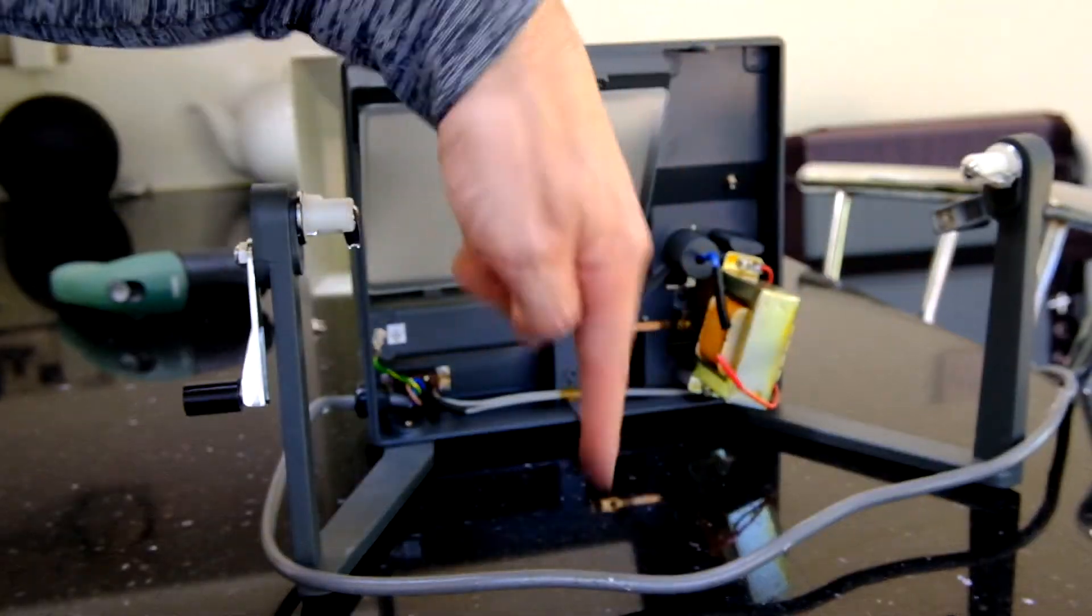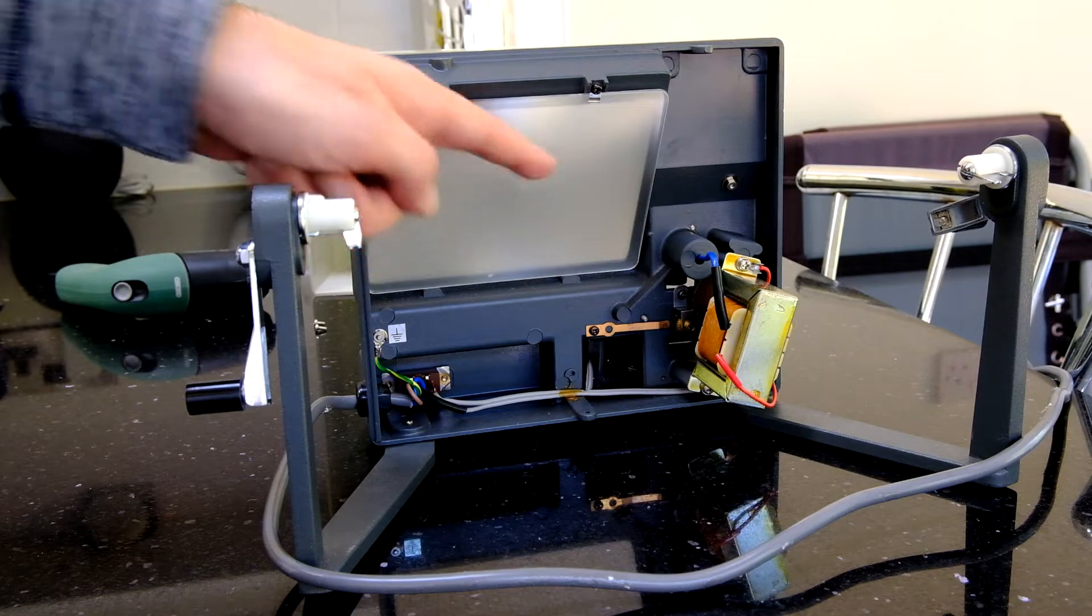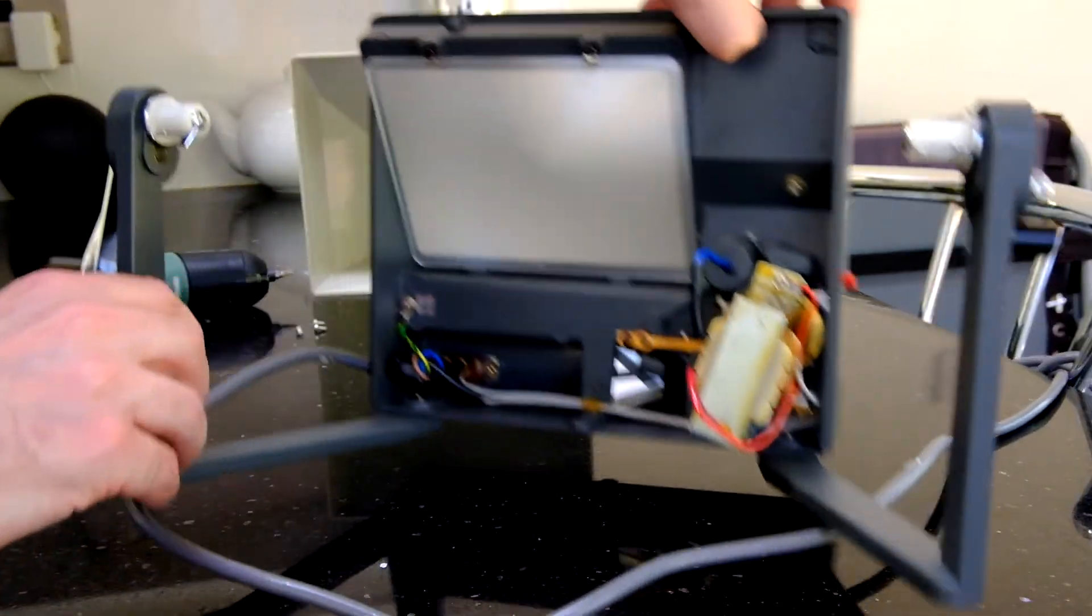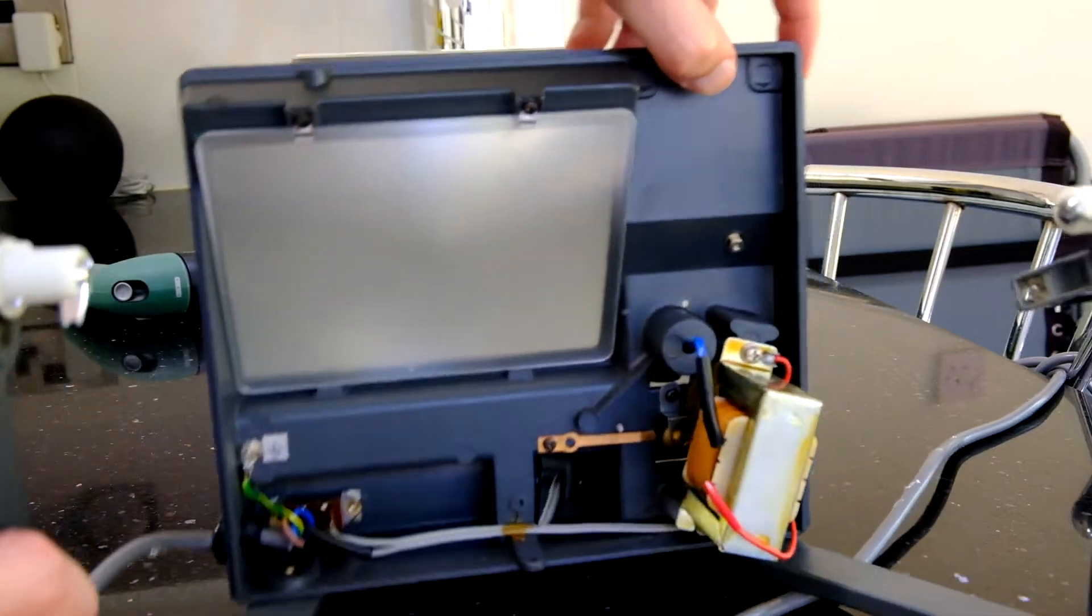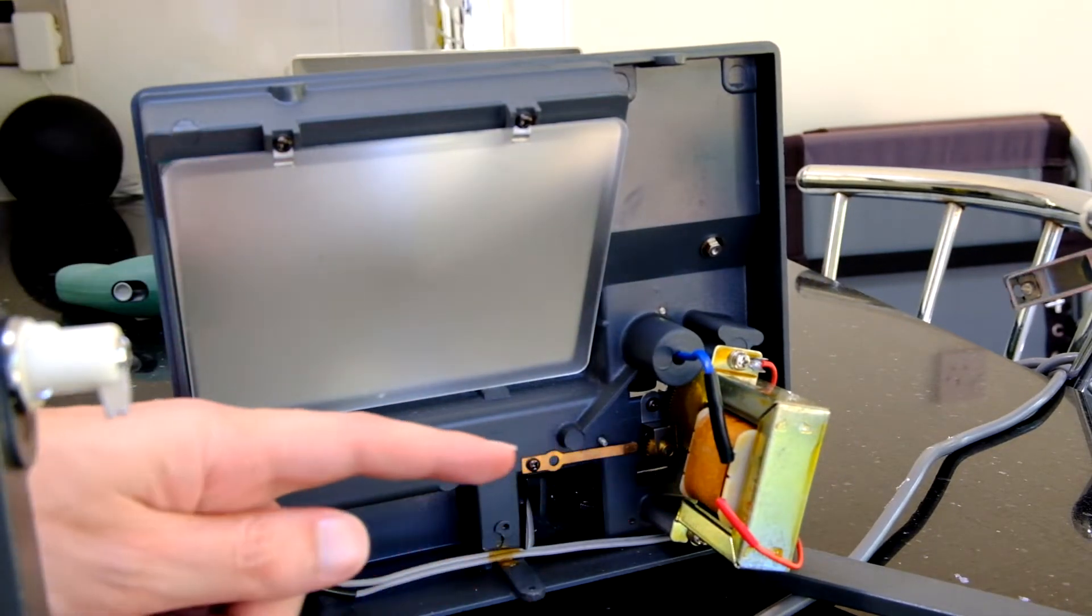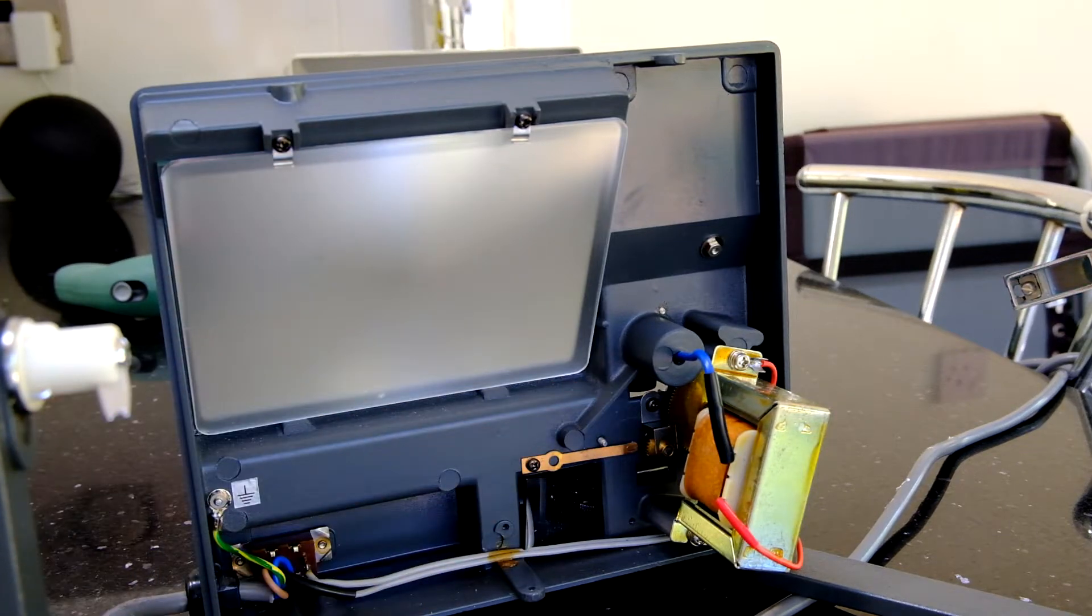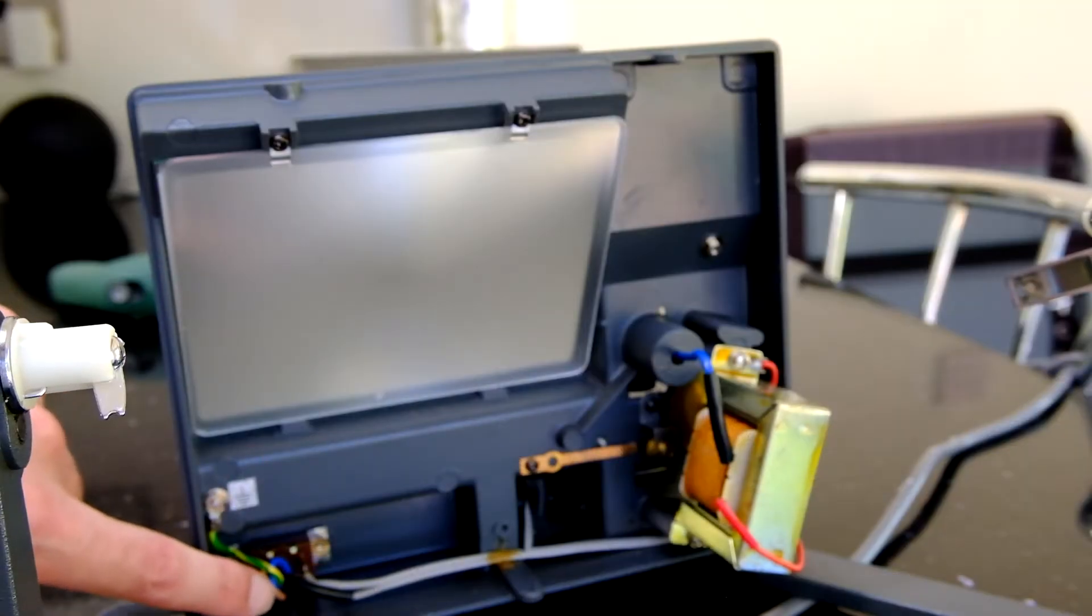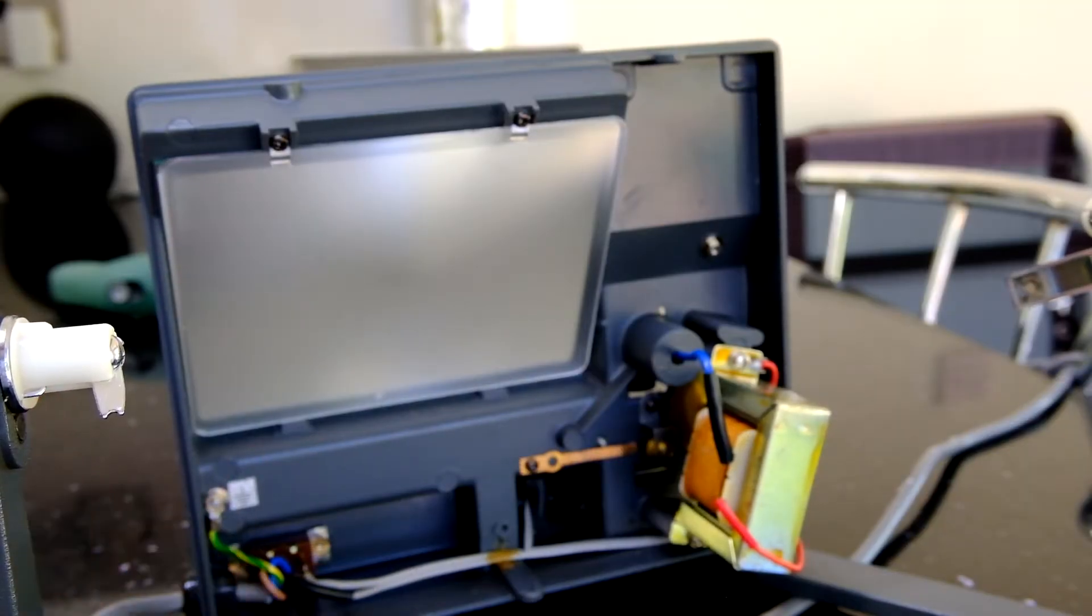There's not a lot inside it as you can see here. You've got a transformer here for the power, and that's powering the light bulb that we saw in the last video. There's a bit down here which is the on and off switch for the light.